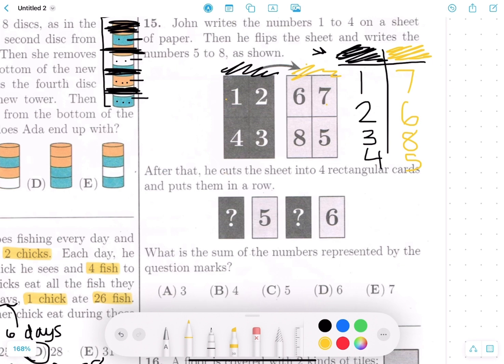So after that he cuts the sheet into the cards and puts them in a row. What is the sum of the numbers represented by the question marks? So these question marks over here. Well, 5 and 6 are already here. So we're gonna X those off. 5 is gone, 6 is gone. That also means that the numbers on the back sides of these cards cannot be the question mark card. So away go 2 and 4. Now we have 1, 7, 3, and 8. Well, these cards over here have a black background which means we can't even look at 7 and 8 which means these numbers must be 1 and 3 and the sum is 4. The answer is B4 for question 15.